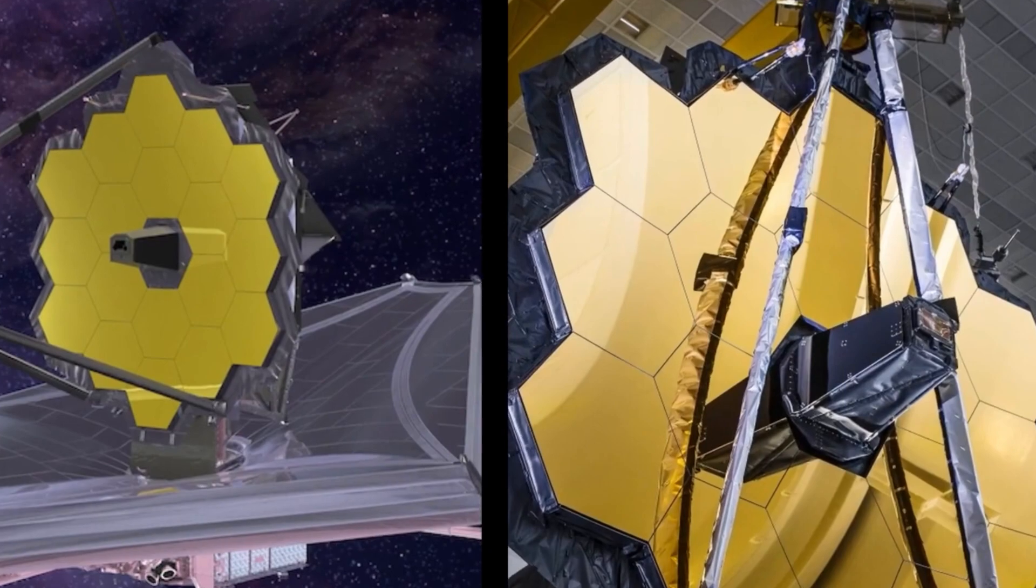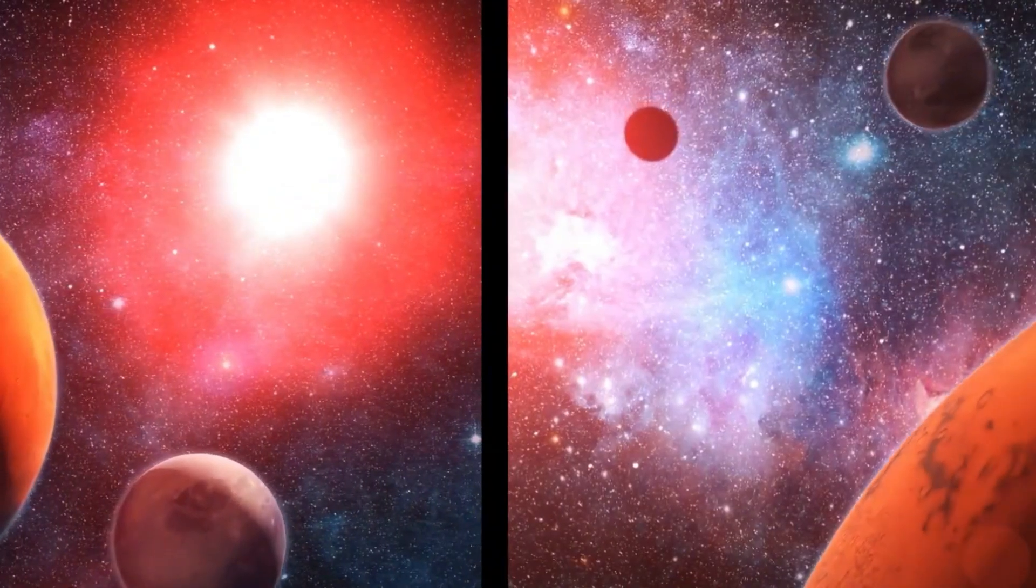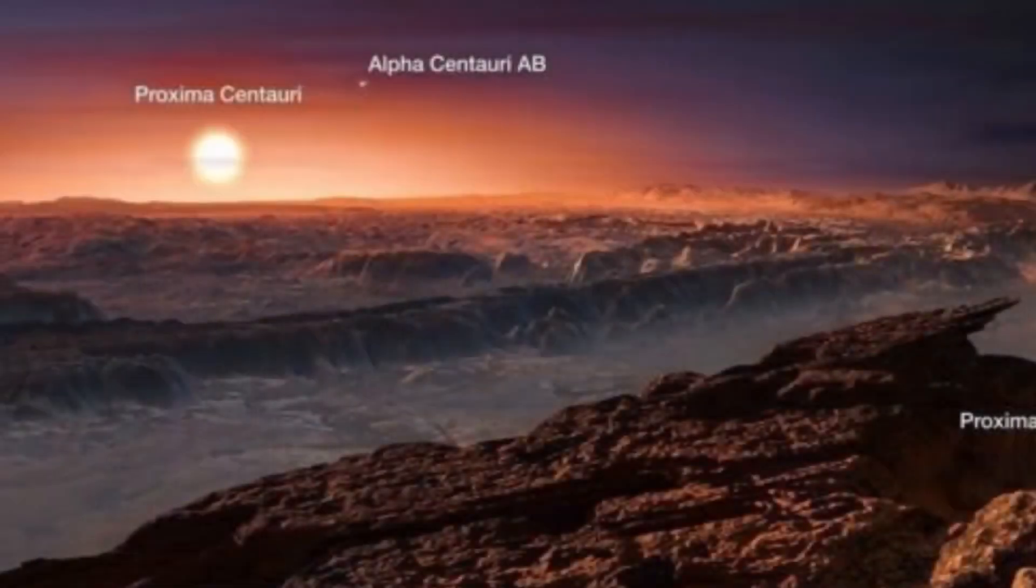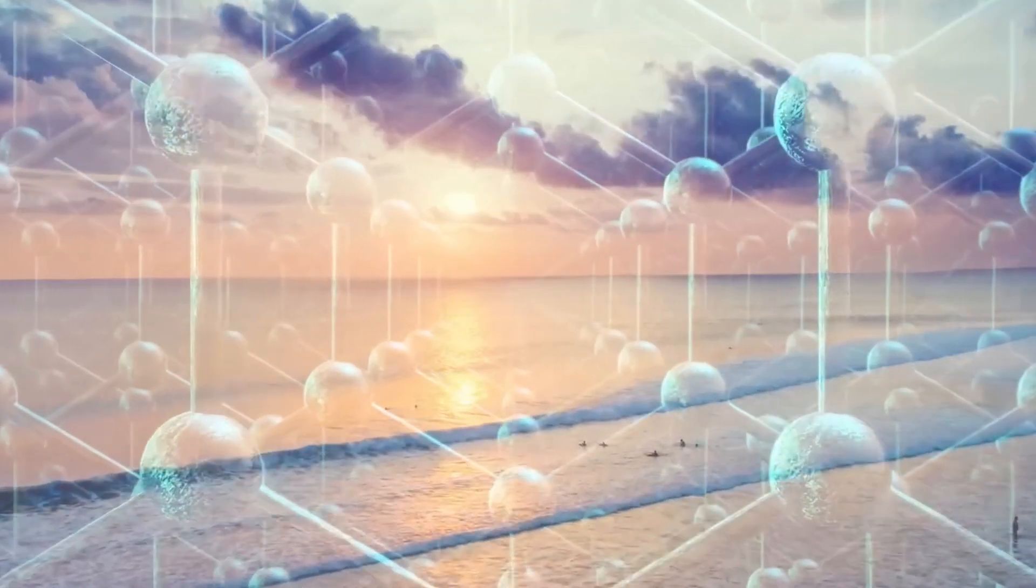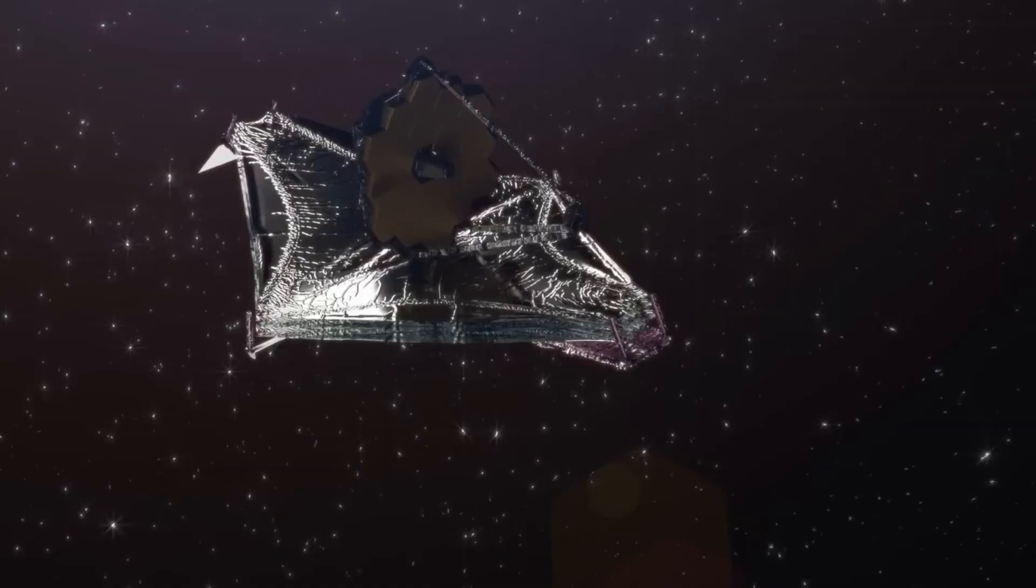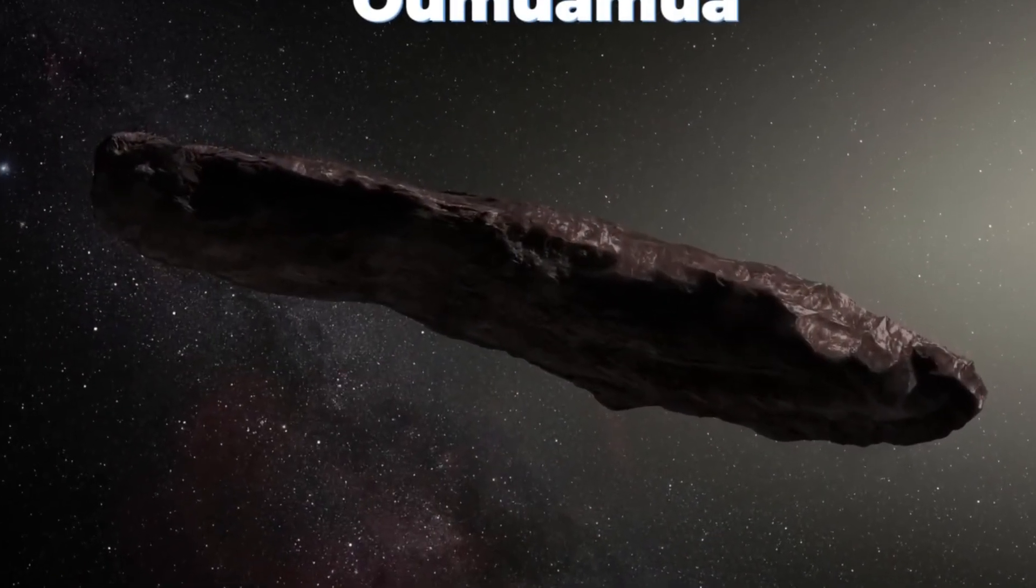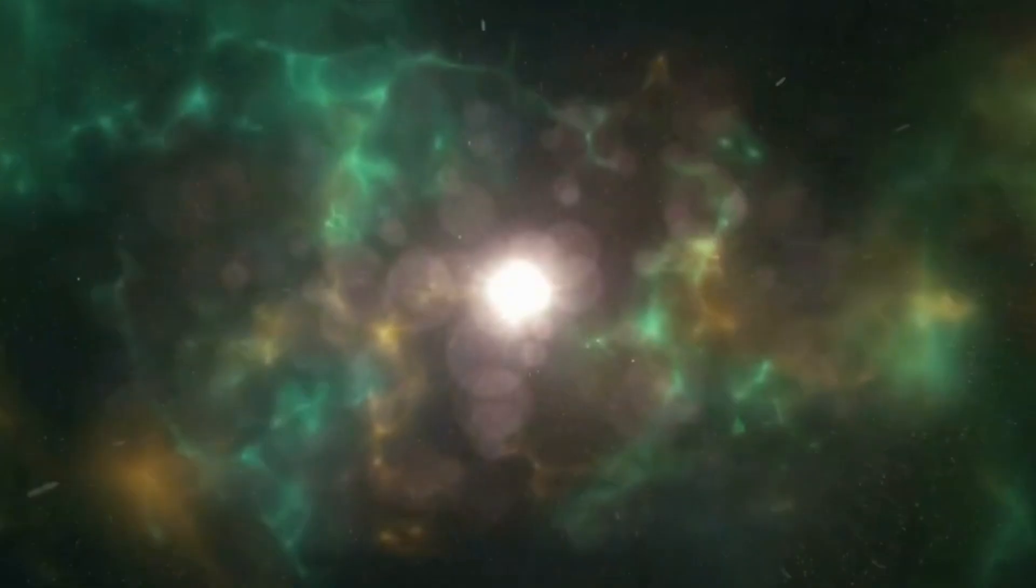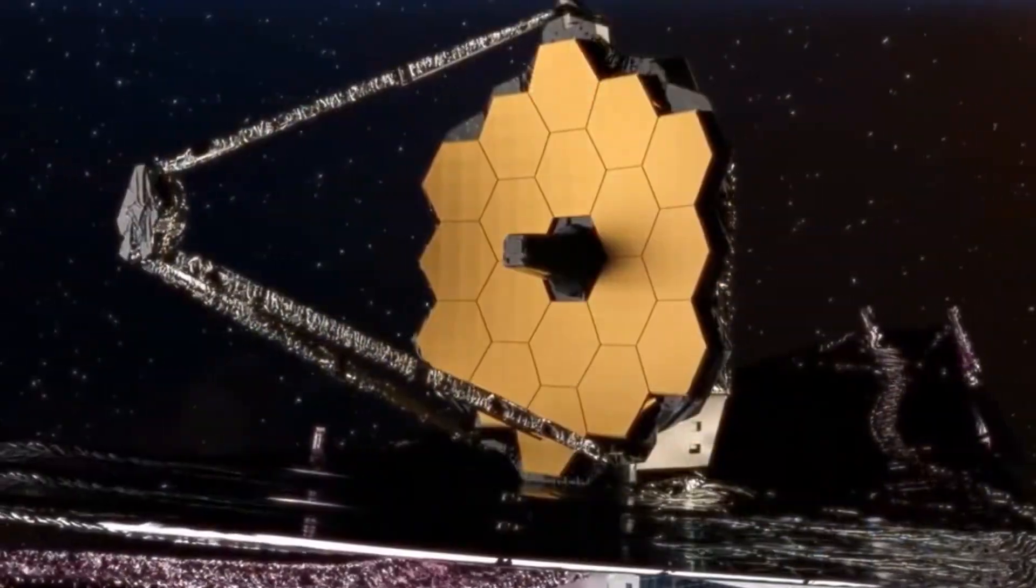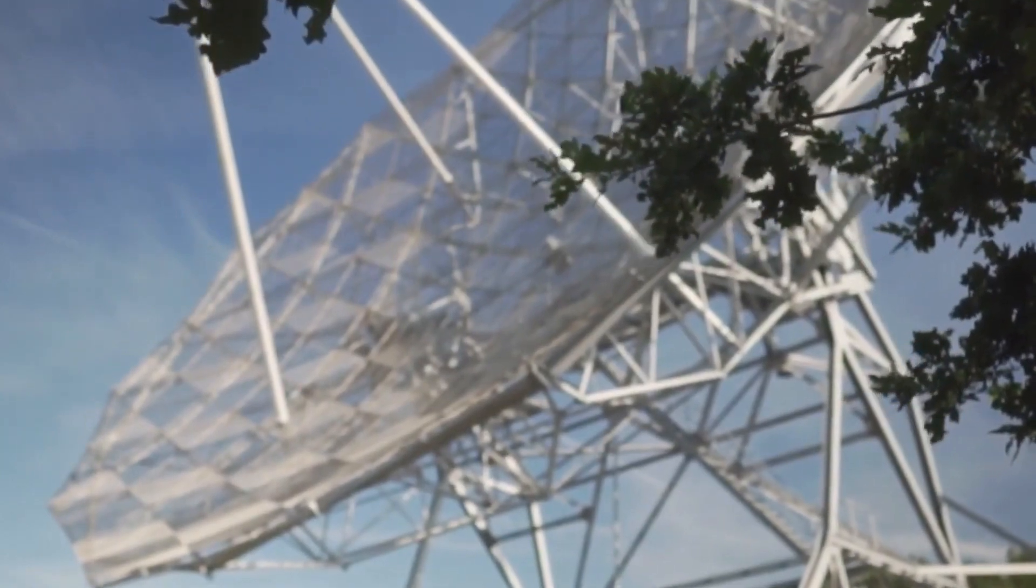As the James Webb Space Telescope embarked on its cosmic journey, NASA unveiled its ambitious agenda, outlining four primary realms of exploration. First, the telescope aimed to witness the universe's inaugural burst of light, a crucial juncture in the cosmic genesis. It sought to probe the ancient celestial past, laying bare the enigmatic assembly of galaxies during the universe's nascent stages. Beyond this cosmic archaeology, the JWST was likewise poised to unveil celestial spectacles of the utmost significance. It yearned to peer into the cradles of stellar birth, shedding light on the genesis of stars and the formation of protoplanetary systems.